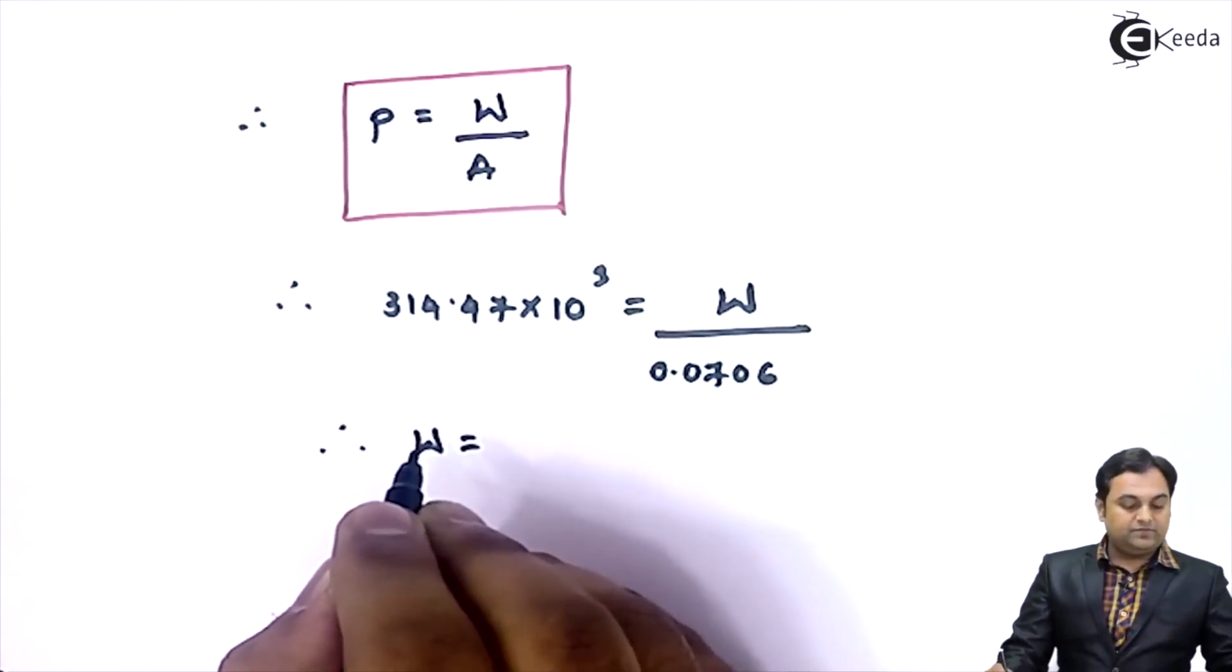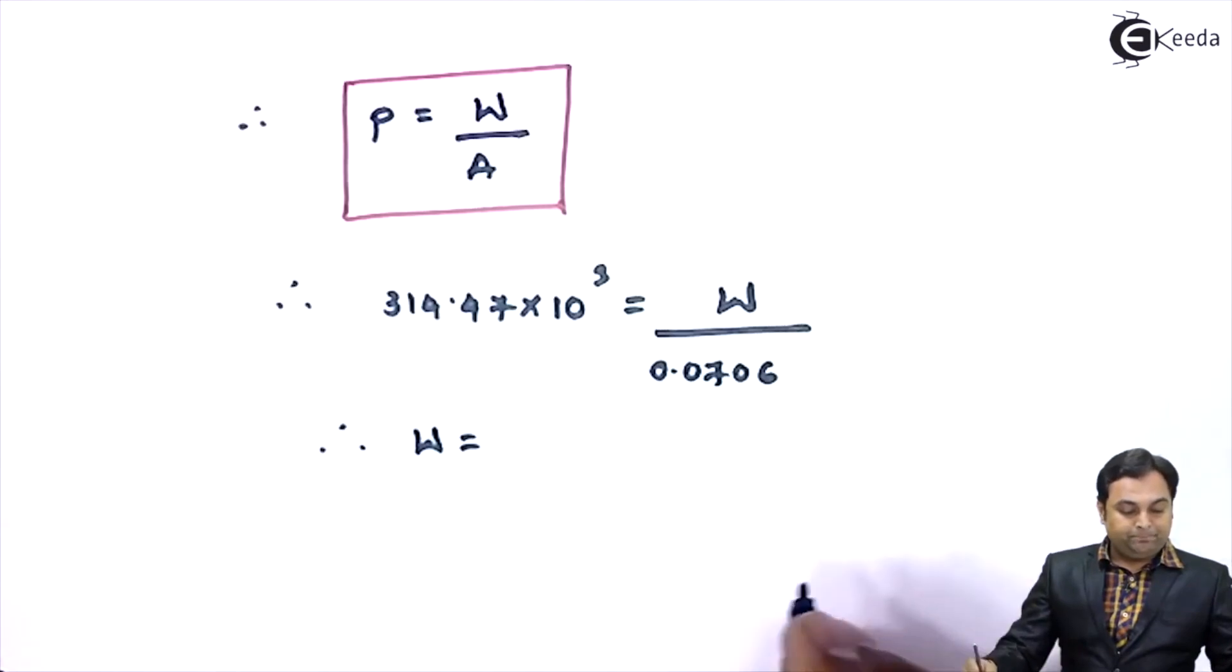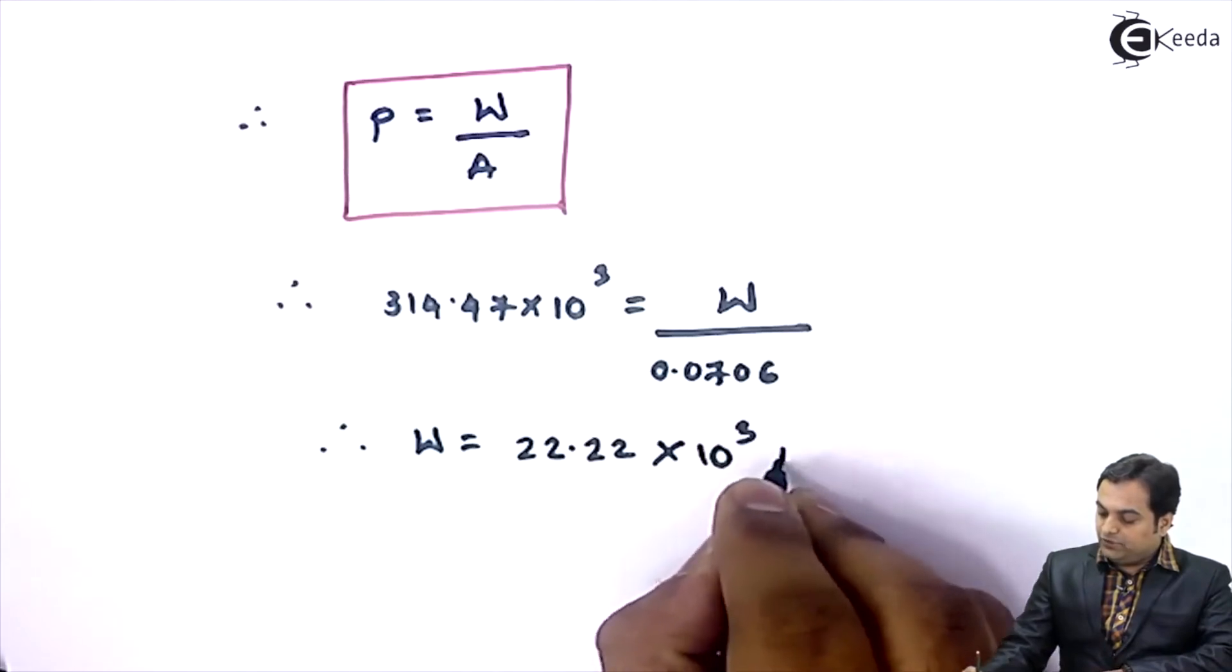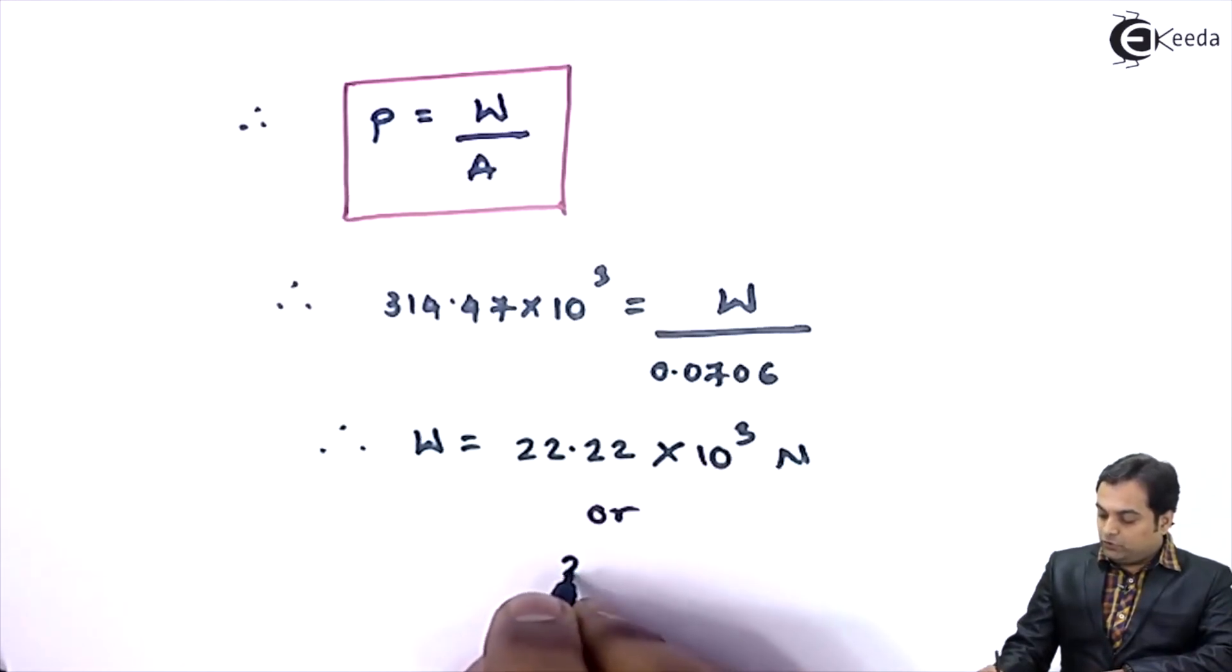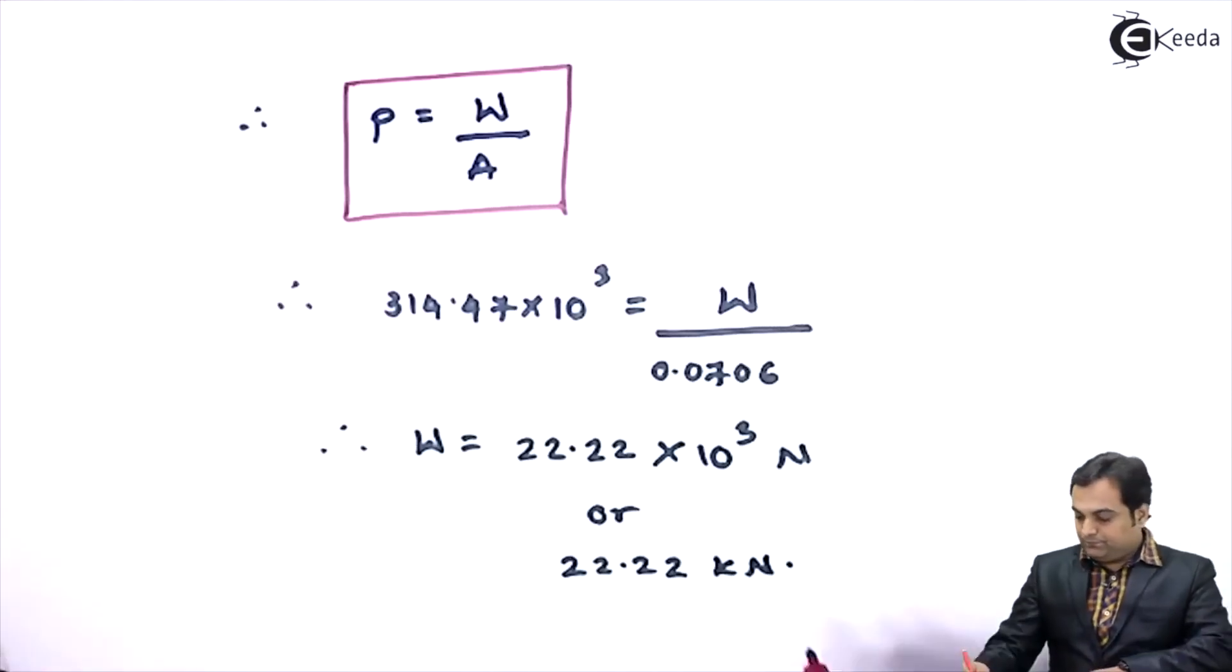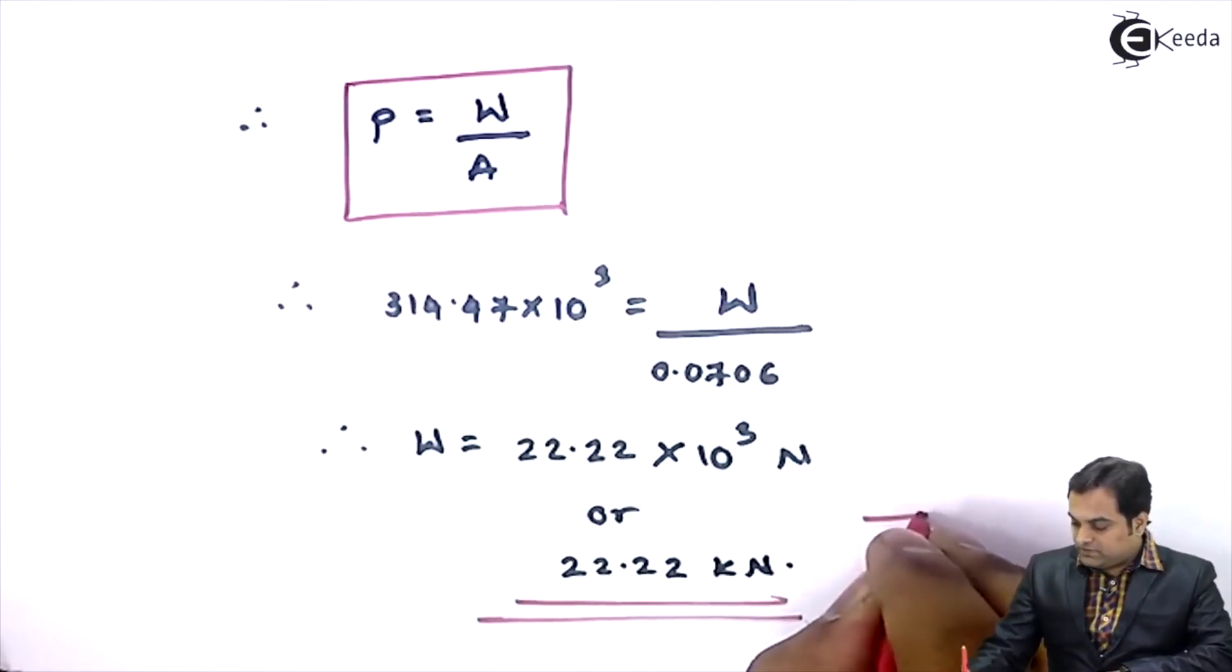W that comes out to be 22.22 into 10 raised to 3 newton, or 22.22 kilonewton. This is my answer.